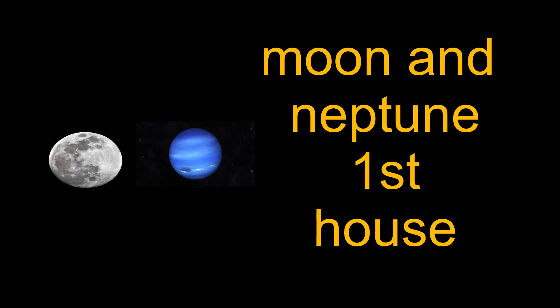The First House is commonly known as the Ascendant or Rising Sign and represents the way you present yourself to the world, your self-image, and your initial reactions to situations. Here's a brief overview of what having the Moon and Neptune in the First House might suggest.